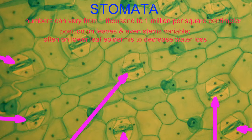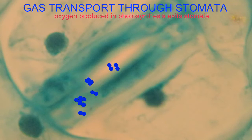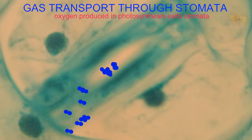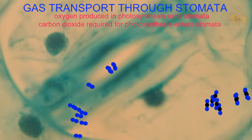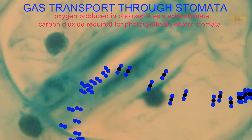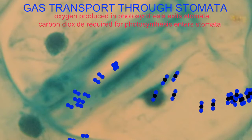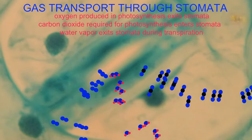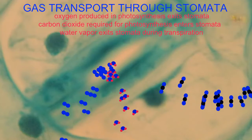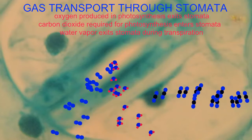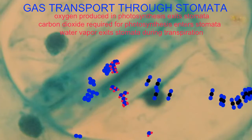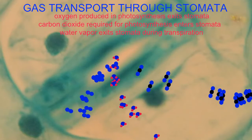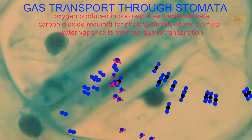Stomata are bounded by two sausage-shaped guard cells. These openings allow the oxygen produced during photosynthesis to leave the plant leaf, and they allow the carbon dioxide required for photosynthesis to enter the plant leaf. Since water is required, there is a column of water transported from the roots through the stems to the leaves, and it is the loss of water vapor from these stomata — known as transpiration — which powers this transport.